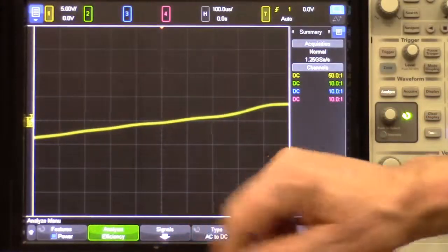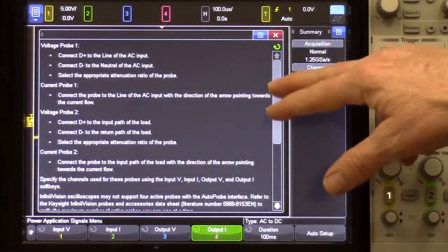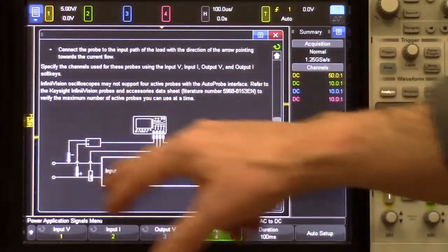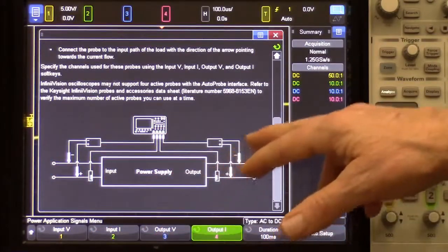Next, I'll select signals, and this gives me a list of instructions on how to connect my probes. If I slide down, I see a very simplified diagram. It's basically input power versus output power.